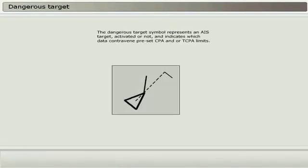The dangerous target symbol represents an AIS target, activated or not, and indicates which data contravene preset CPA and/or TCPA limits.